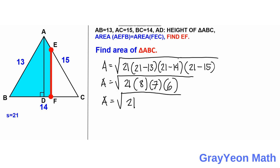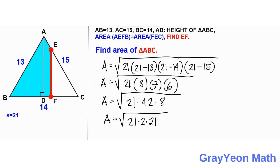This gives us area equal to the square root of 21 times 8 times 7 times 6. If you multiply 6 and 7 to give you 42, times 8, and rearranging the factors by writing 42 as 2 times 21, then combining 8 times 2 gives 16, which is 4 squared. So the area is equal to the square root of 4 squared times 21 squared, which equals 21 times 4, giving area equal to 84.